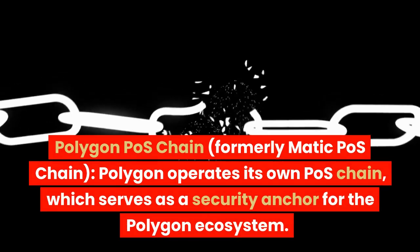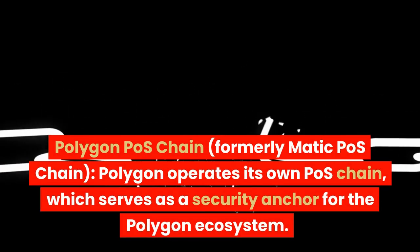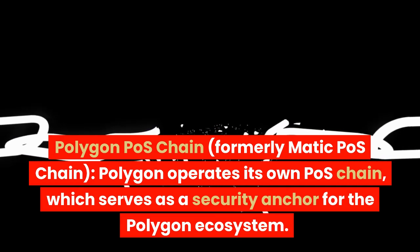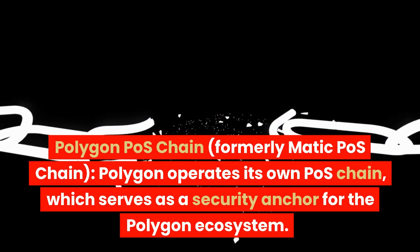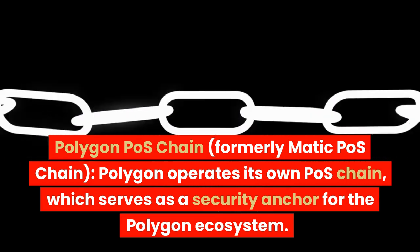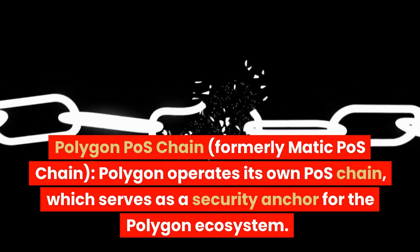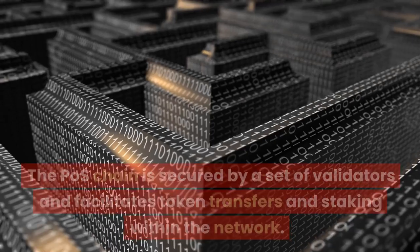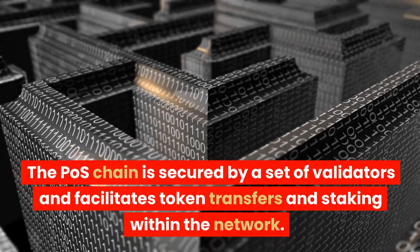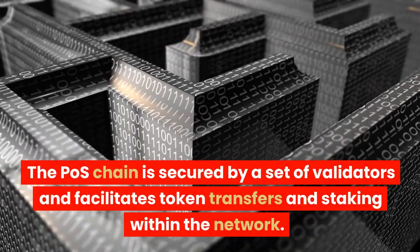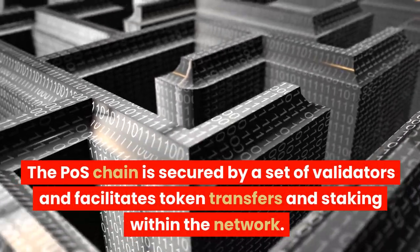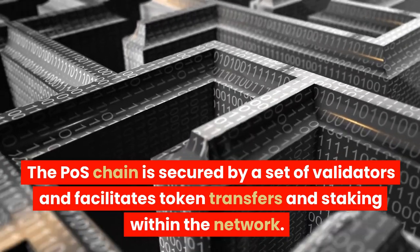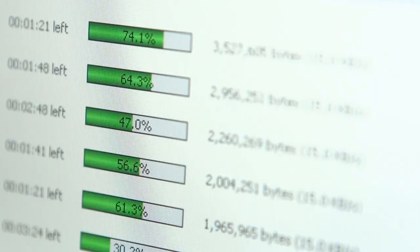Polygon PoS Chain, formerly MATIC PoS Chain: Polygon operates its own PoS chain, which serves as a security anchor for the Polygon ecosystem. The PoS chain is secured by a set of validators and facilitates token transfers and staking within the network.